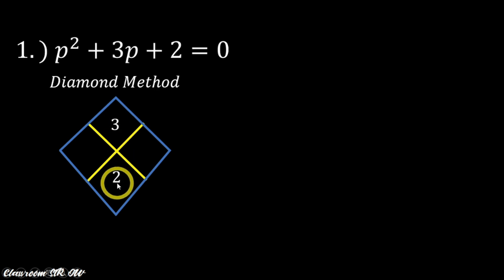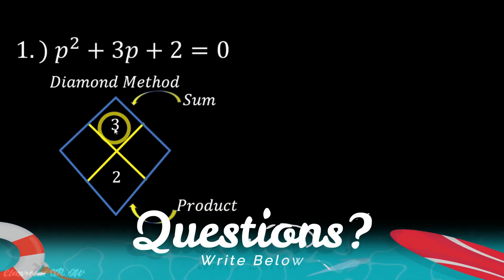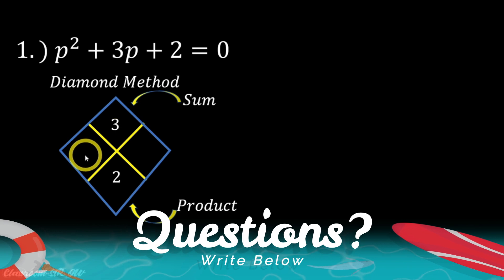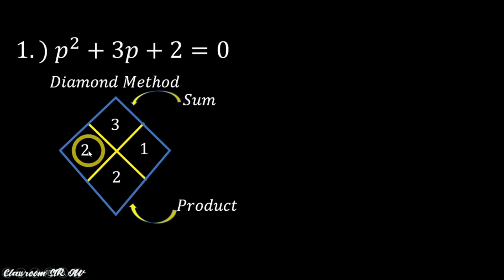Now what shall we do with these numbers 3 and 2? Now we will look for two factors that we will write in this side of the diamond, which is 2 and 1. So what is the use of 2 and 1? Because 2 times 1 is 2 and 2 plus 1 is 3. So that is now the product and the sum.